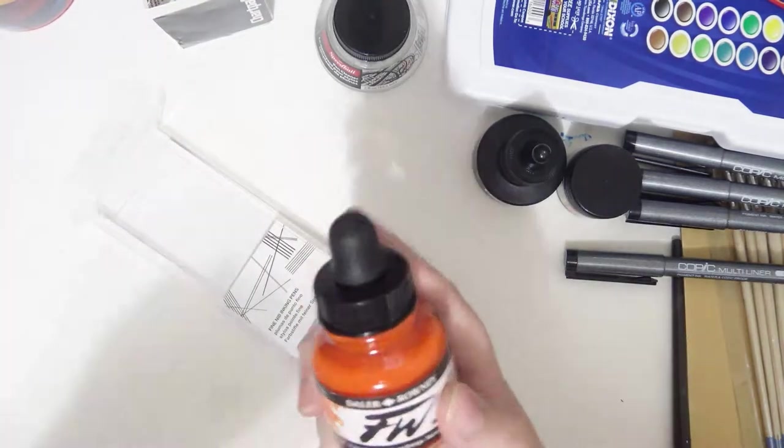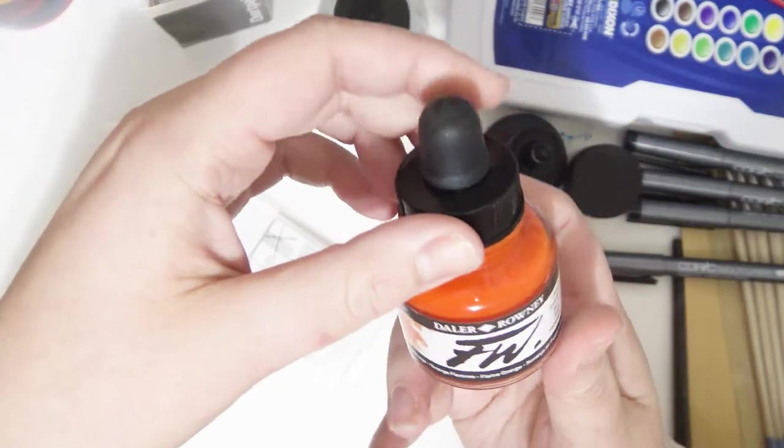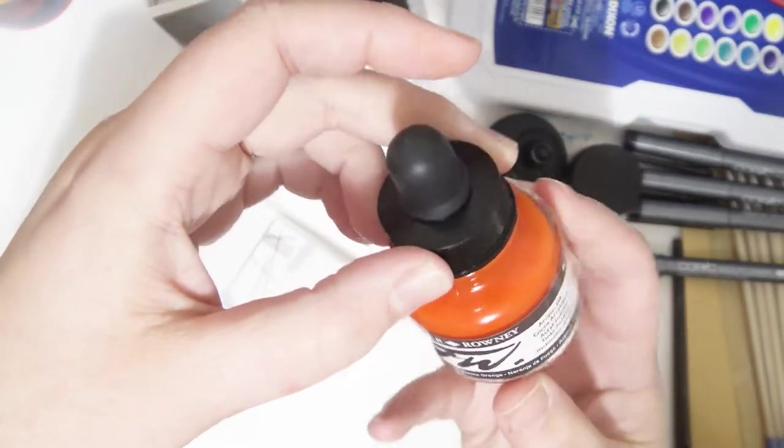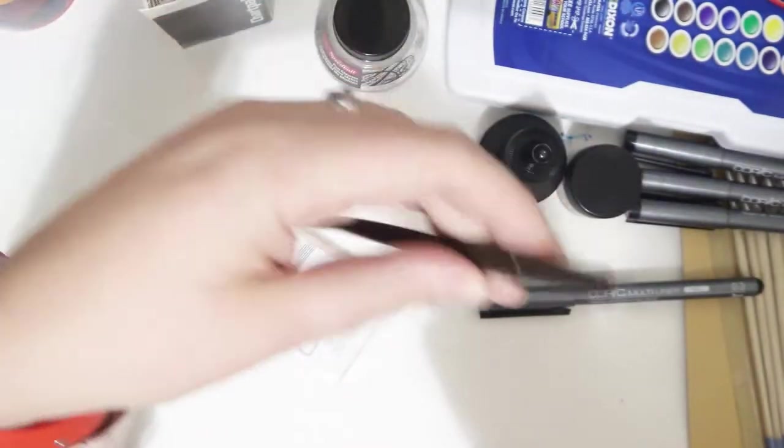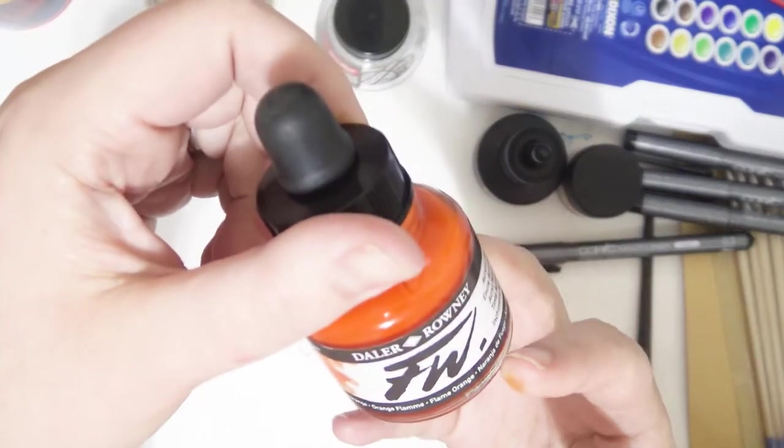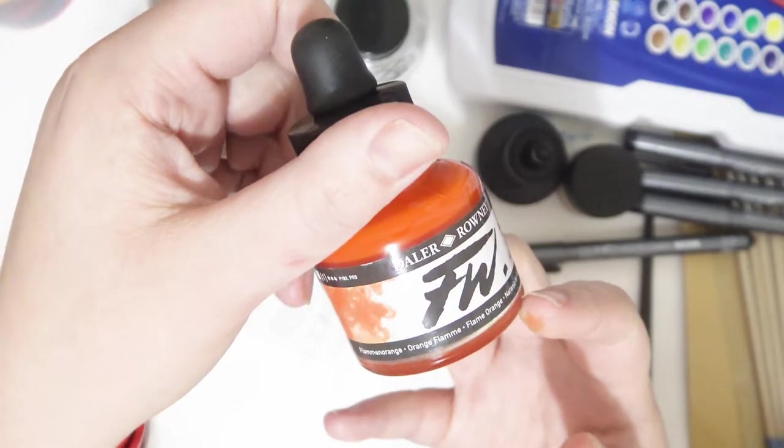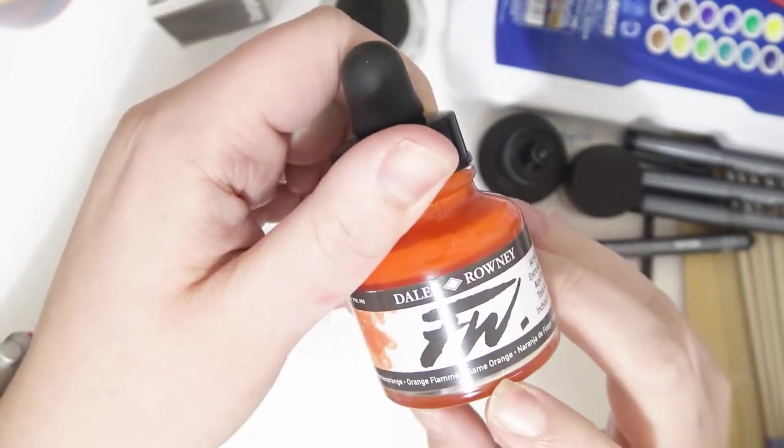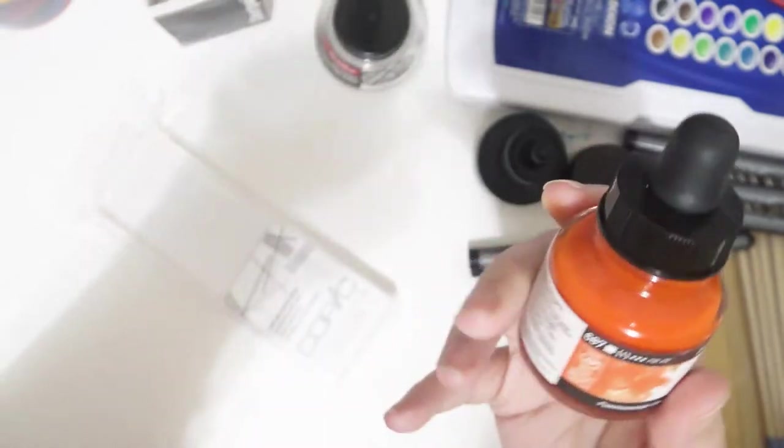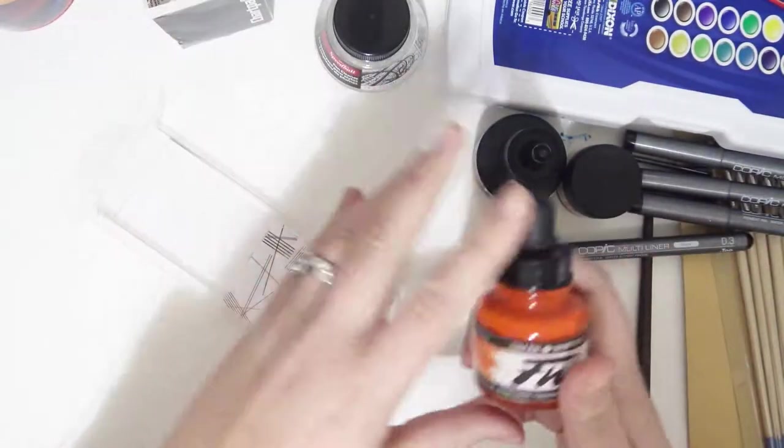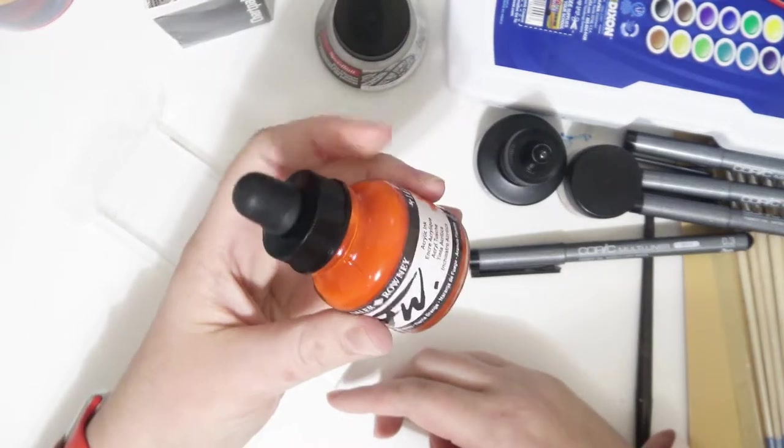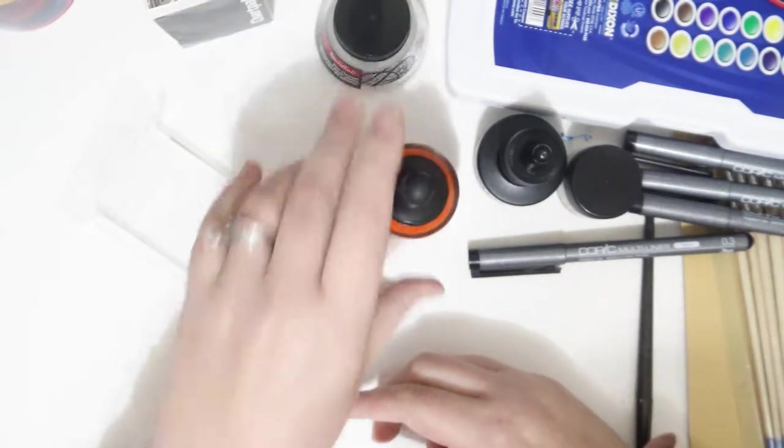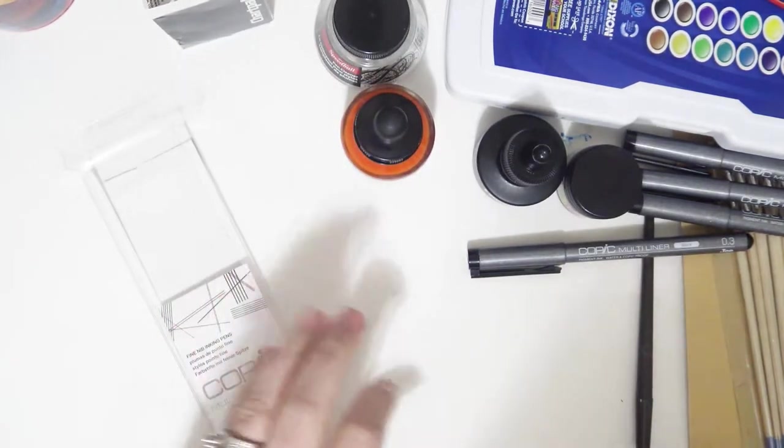The last thing I got was this Daylor and Rowney acrylic ink. And I got this to use with the calligraphy pen. And I got it in orange or flame orange, I guess. And I really wanted a just bright, crazy color. And it was between this and a real hot pink one. And I let my son choose and he chose the orange. So, orange it is.